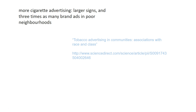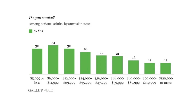Different communities are approached by tobacco companies in different ways. Tobacco advertising features larger signs and far more ads in poor neighborhoods than in rich neighborhoods. Tobacco advertising is targeted specifically and intentionally towards poorer, lower class communities because that's where the uptake is greatest — it's a marketing strategy, and it works. This chart shows that those who make the most money are least likely to smoke, while those who make the least money are most likely to smoke, with only the very poorest being slightly less likely, perhaps because they can't afford to.